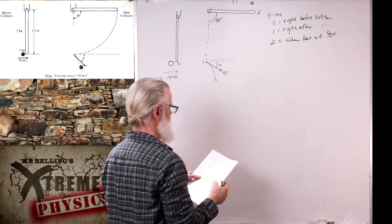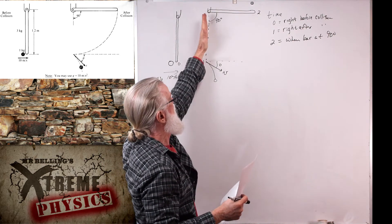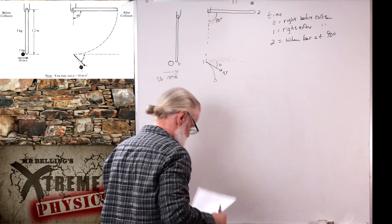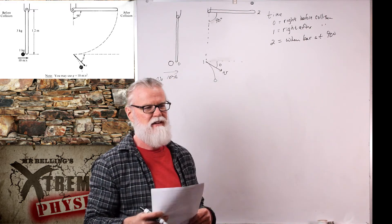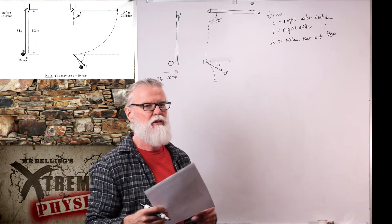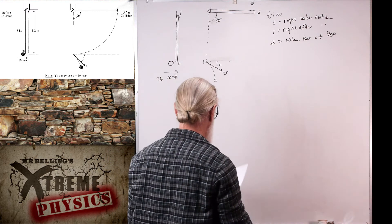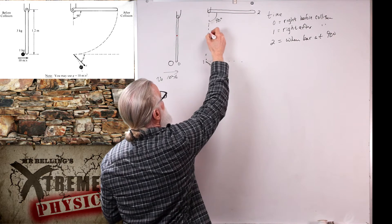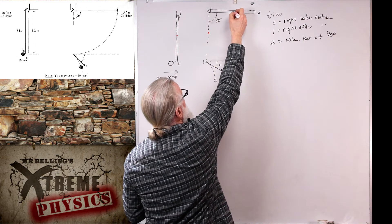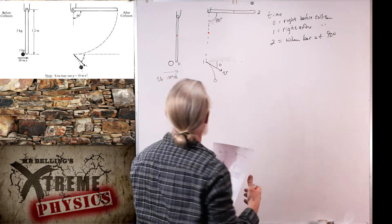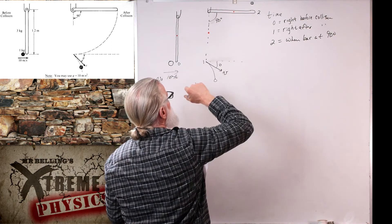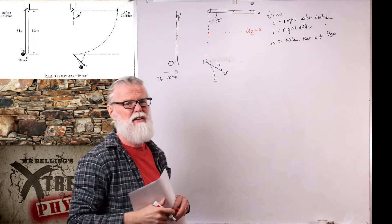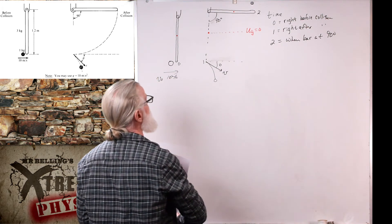What will work is conservation of mechanical energy after the collision. After the collision, the bar starts hanging vertically and swings all the way up to 90 degrees, so it starts with rotational kinetic energy and ends with gravitational potential energy. The bar's center of mass rises by L/2, so I'll define the initial vertical position as zero gravitational potential energy and use conservation of energy: energy of bar at t₁ equals energy of bar at t₂.